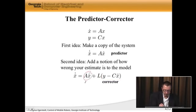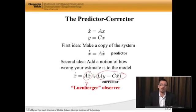So this part here is the predictor, and this part here is the corrector. And this kind of structure is known as a Luenberger observer, named after David Luenberger.